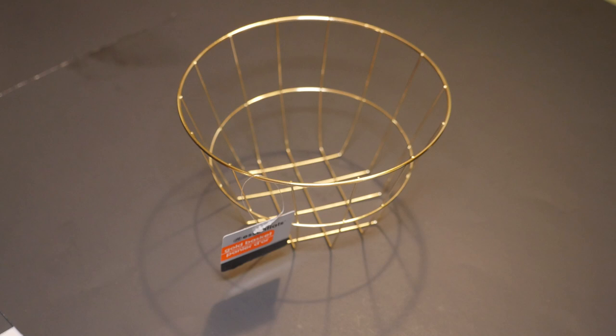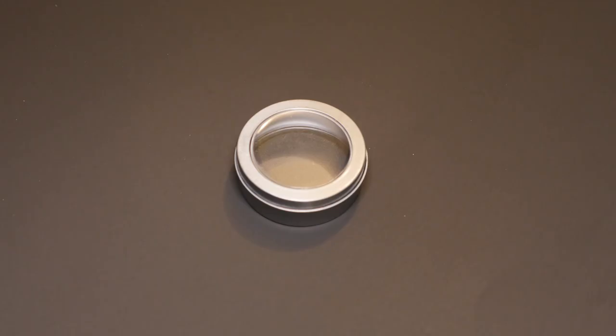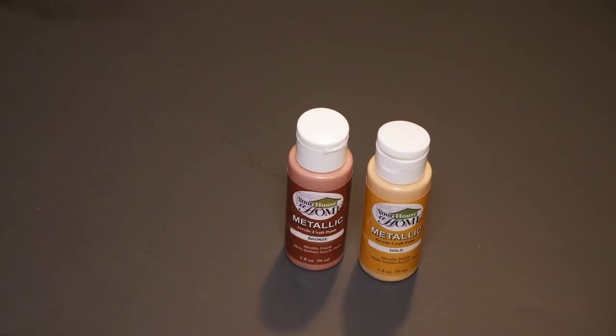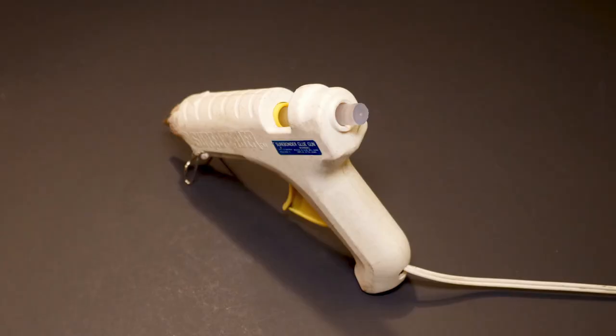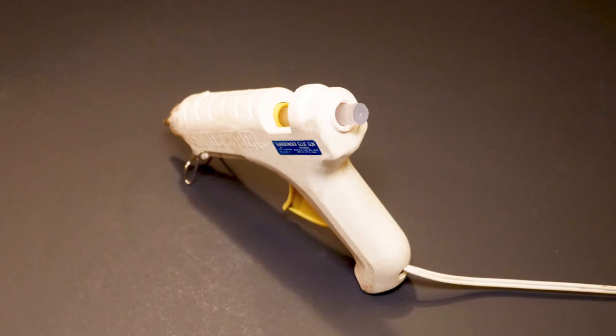To make my lampshades I'm using a couple of gold round baskets that I got from Dollar Tree, a couple of small round magnetic tin containers, white copy paper, Your House a Home metallic acrylic paint, scissors, and a hot glue gun.